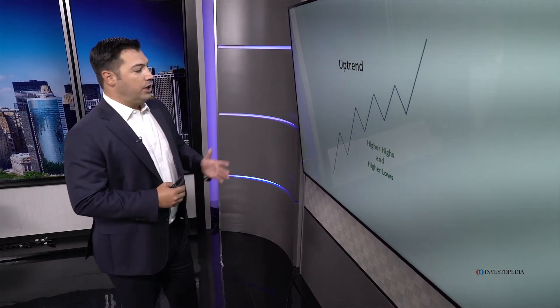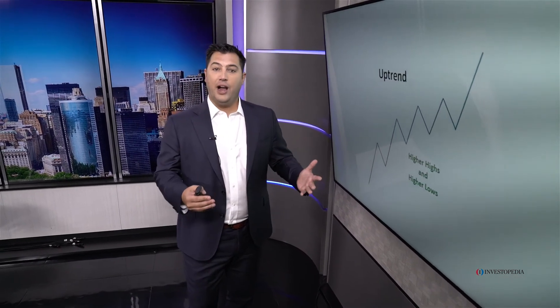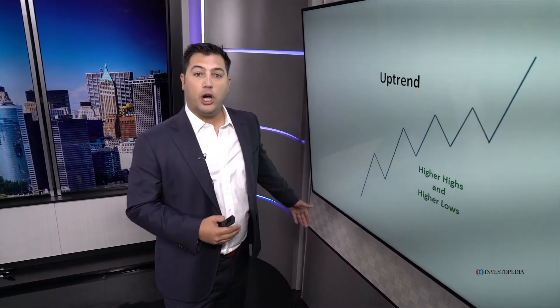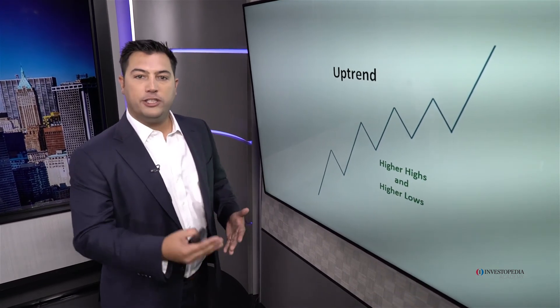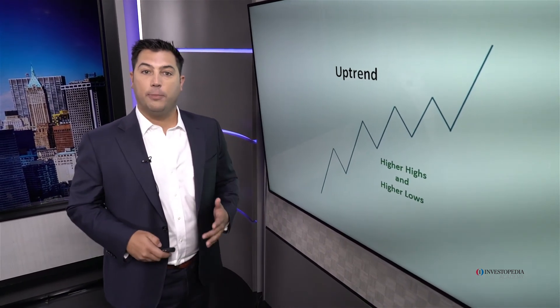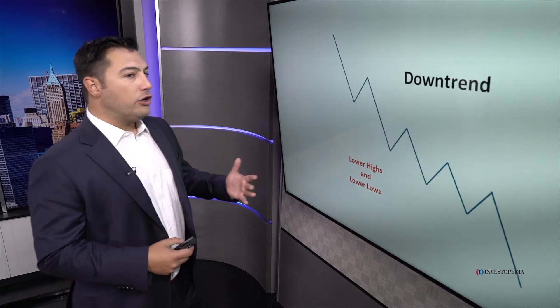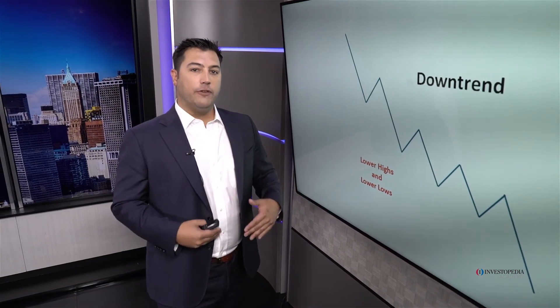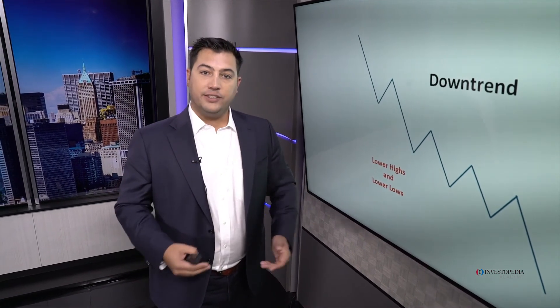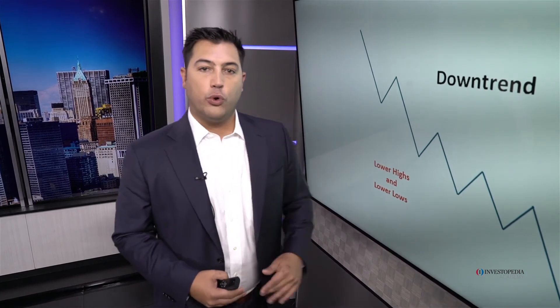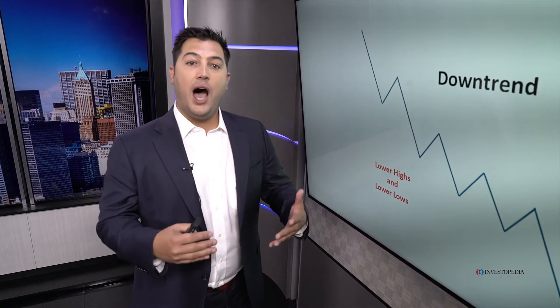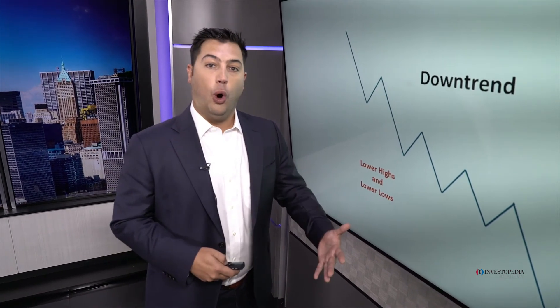An uptrend is very clear — a series of higher lows and higher highs. We'll often accompany this with a moving average that we also want to be upward sloping. That's an uptrend. We also have downtrends: series of lower lows and lower highs. If you add a moving average, it should be downward sloping as well, essentially reiterating the fact that we are not heading higher, but we are in fact heading lower.